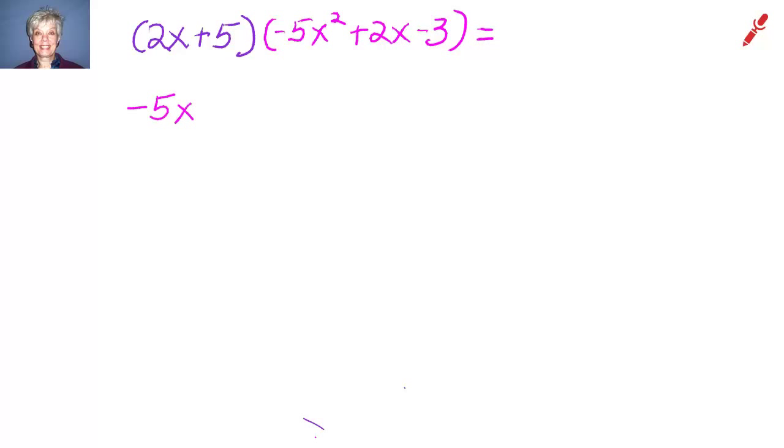We're going to distribute the binomial 2x+5 to each term in the trinomial. What I'm going to do is slip 2x+5 in right behind each term.